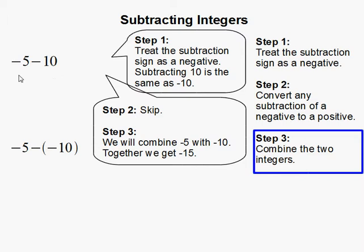You can think of it as negative 5 as owing 5 and negative 10 as owing 10. So therefore in the end you should owe 15. So our resulting answer is negative 15.